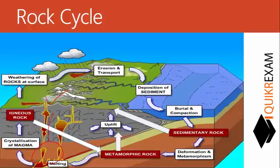Upliftment of magma happens under Earth's surface. When it is uplifting, if it does not reach Earth's surface and gets solidified before doing so, it forms igneous rock. Due to weathering of the rock surface, this igneous rock then gets exposed to Earth's surface.